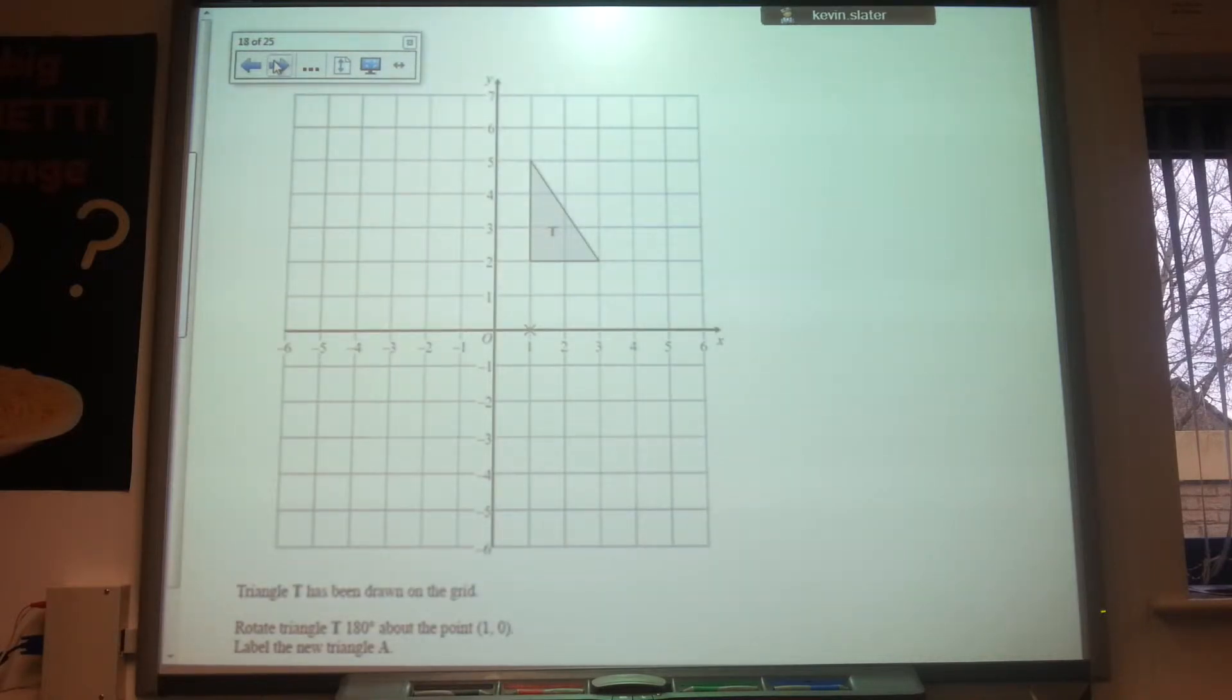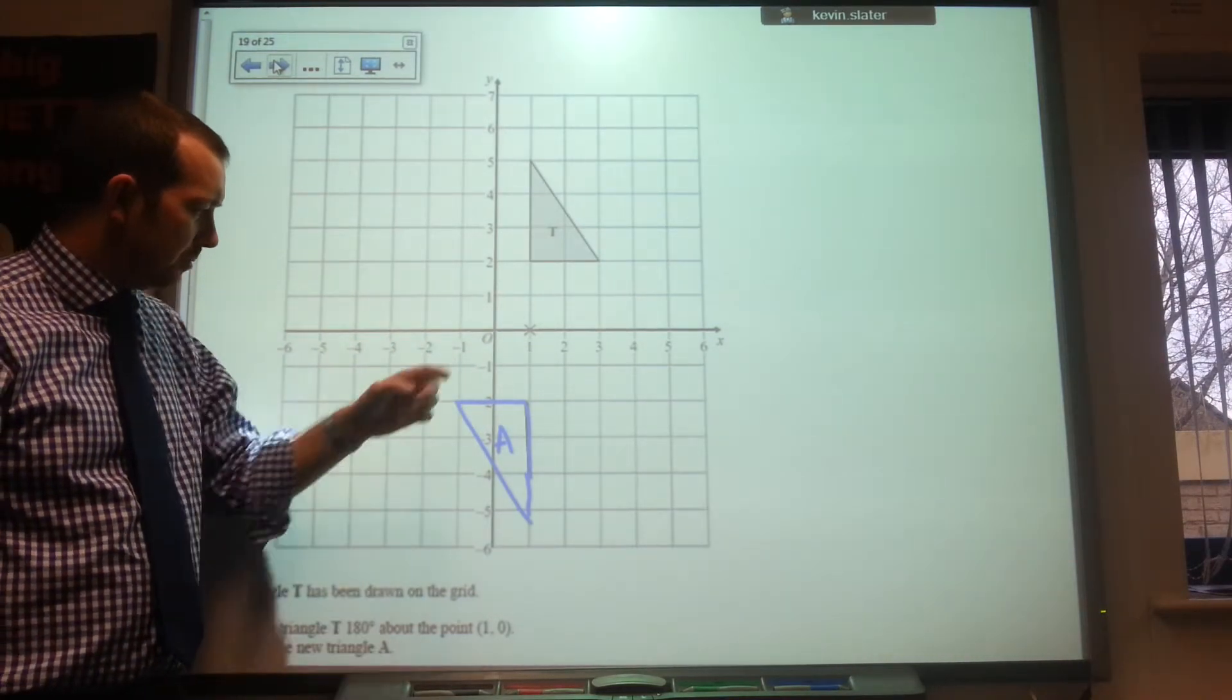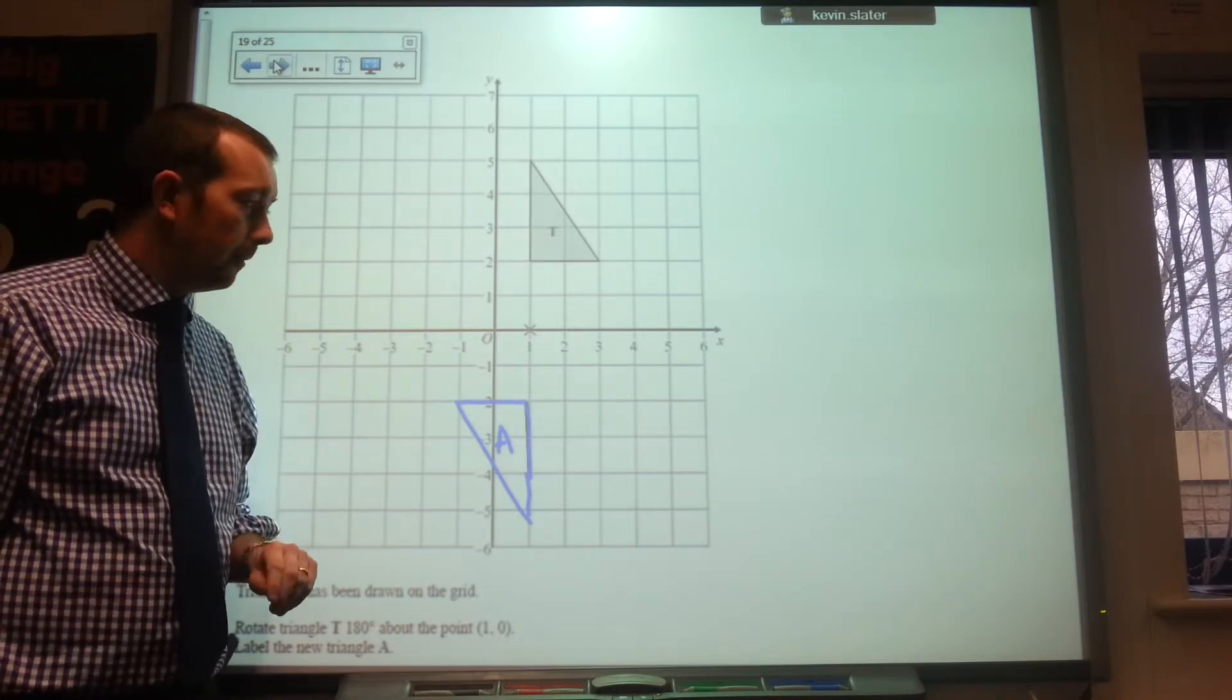Triangle T has been drawn on the grid. Rotate T 180 degrees about the point one, zero. Label the new triangle A. And there it should be. On this one, they happen to have drawn the centre of rotation there just by putting a cross there. So that's where it should have ended up.